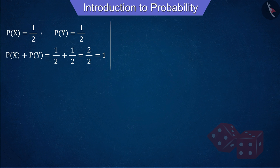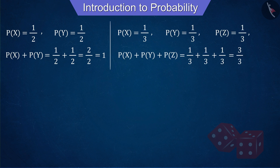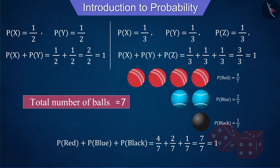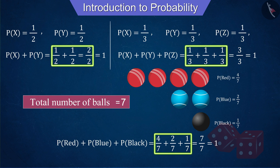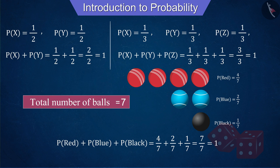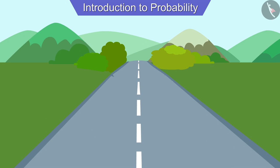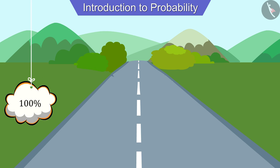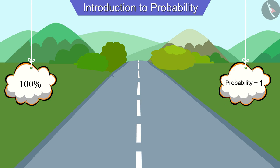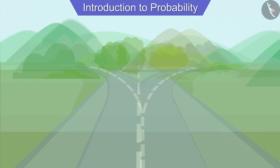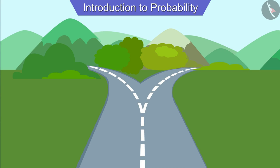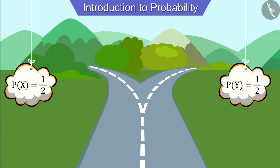If we add the probabilities of all outcomes together — whether for two roads, three roads, or the balls — we always get one. This is because if there is only one road, there is no other choice, so the probability of walking on that path is 100 percent, or probability equals one. This is called a sure event. When the road divides into more than one, the probability gets divided accordingly, and adding these divided probabilities always gives one.